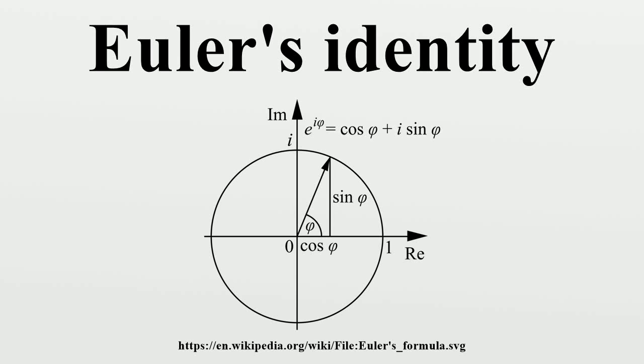In mathematics, Euler's identity is the equality where e is Euler's number, the base of natural logarithms, i is the imaginary unit, which satisfies i² equals minus 1, and π is pi, the ratio of the circumference of a circle to its diameter.